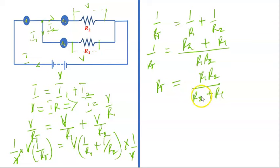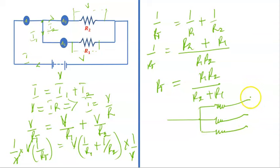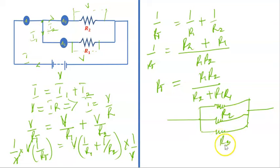You can also have a case where you have three resistors connected in parallel. Here are three resistors connected in parallel: R1, R2, and R3. The same procedure applies. Let's take some examples to help us understand this better.